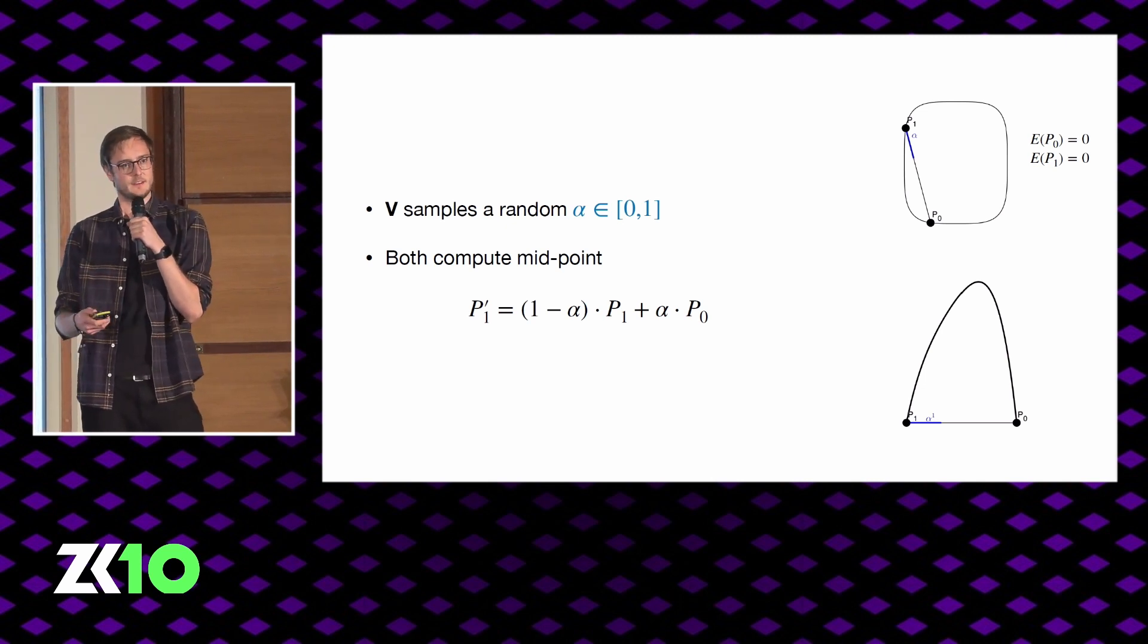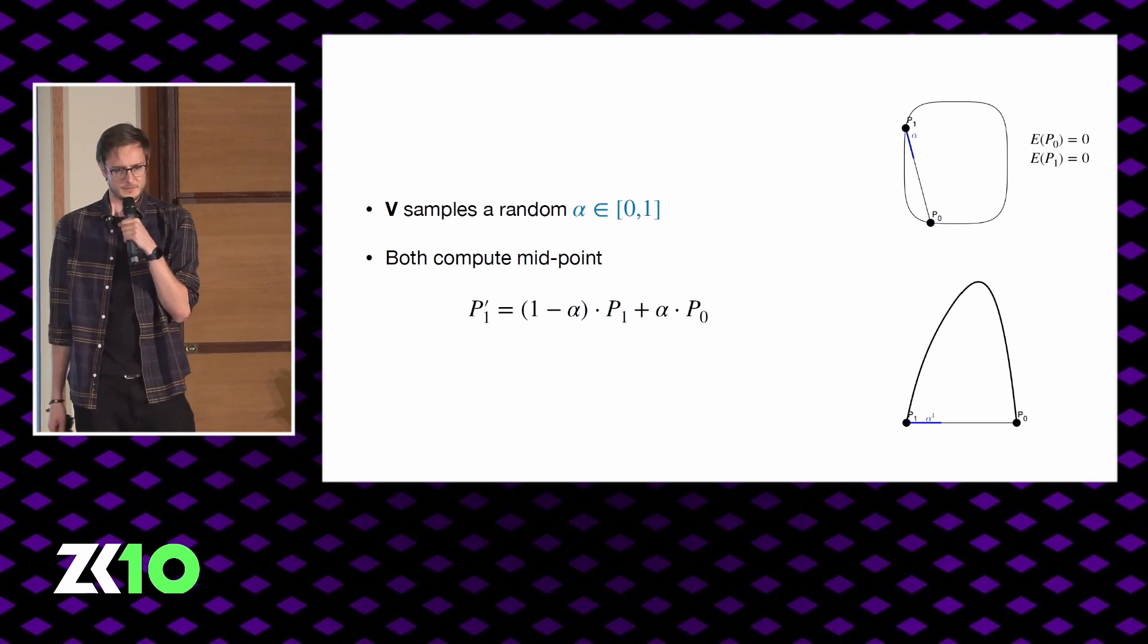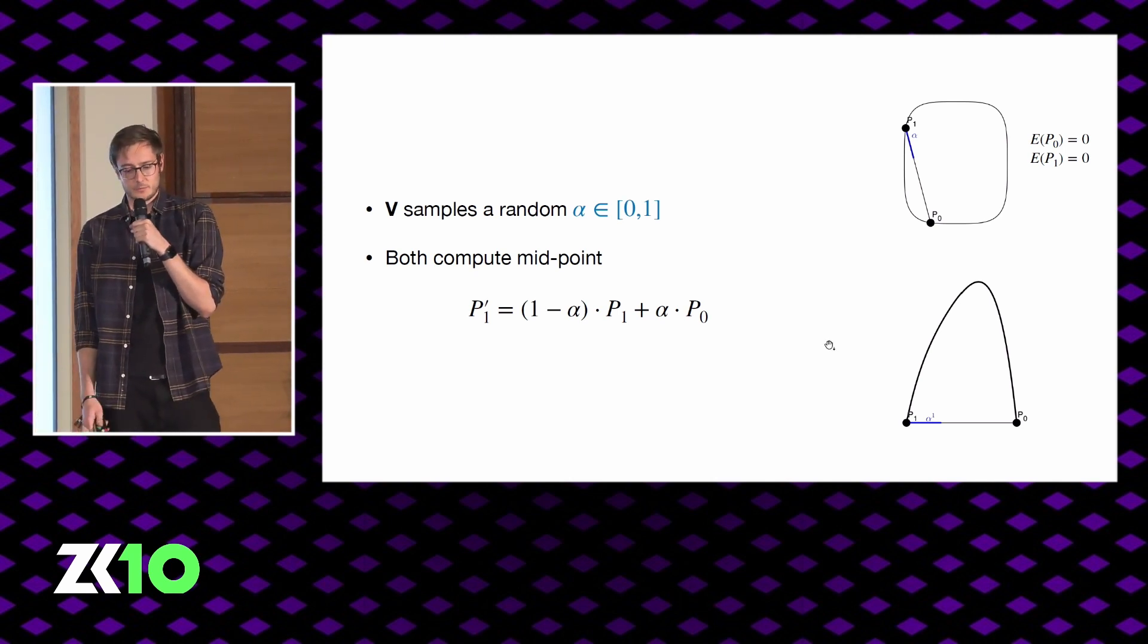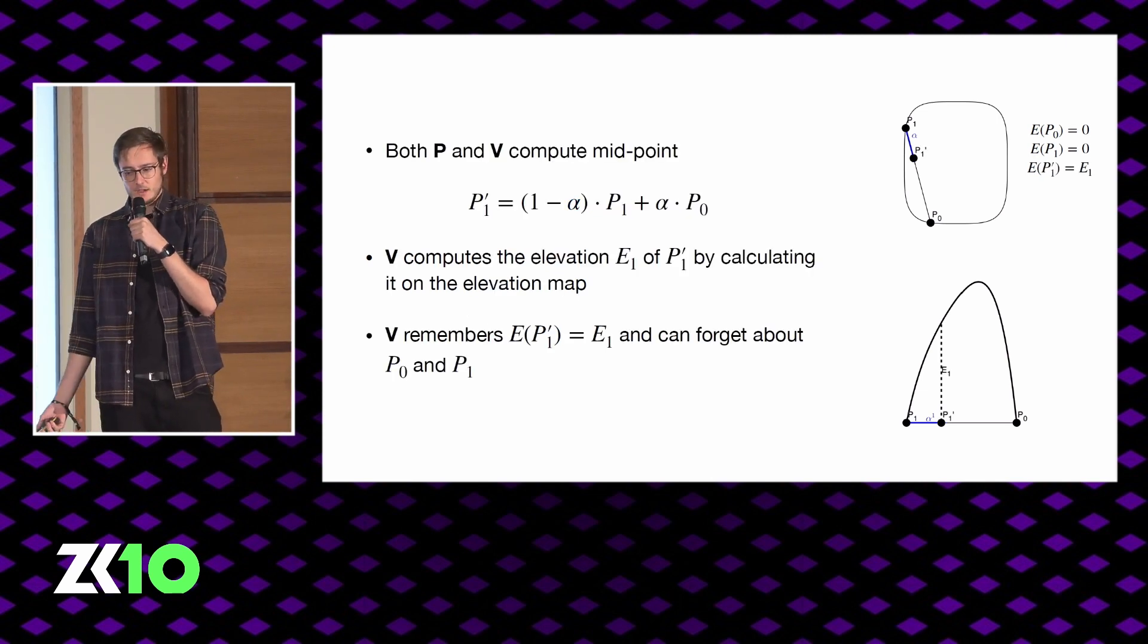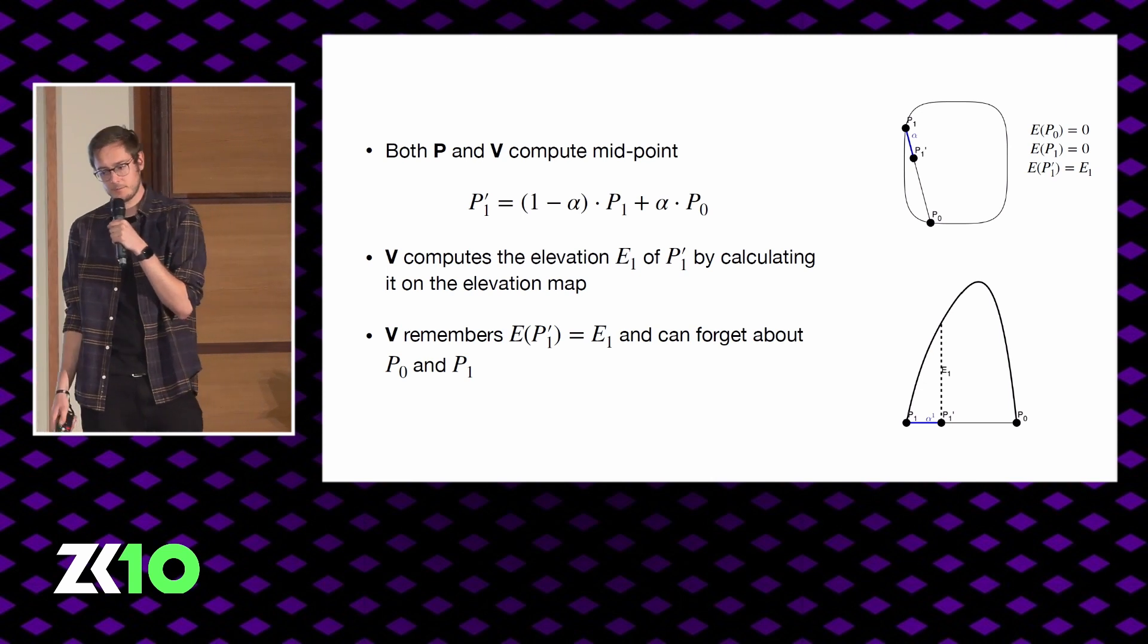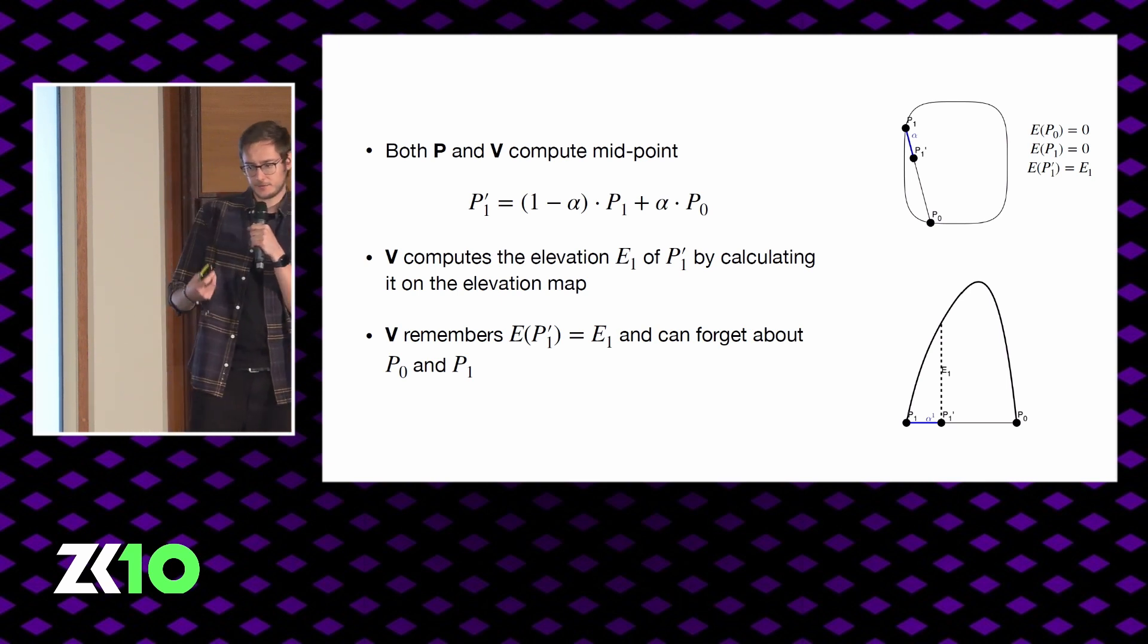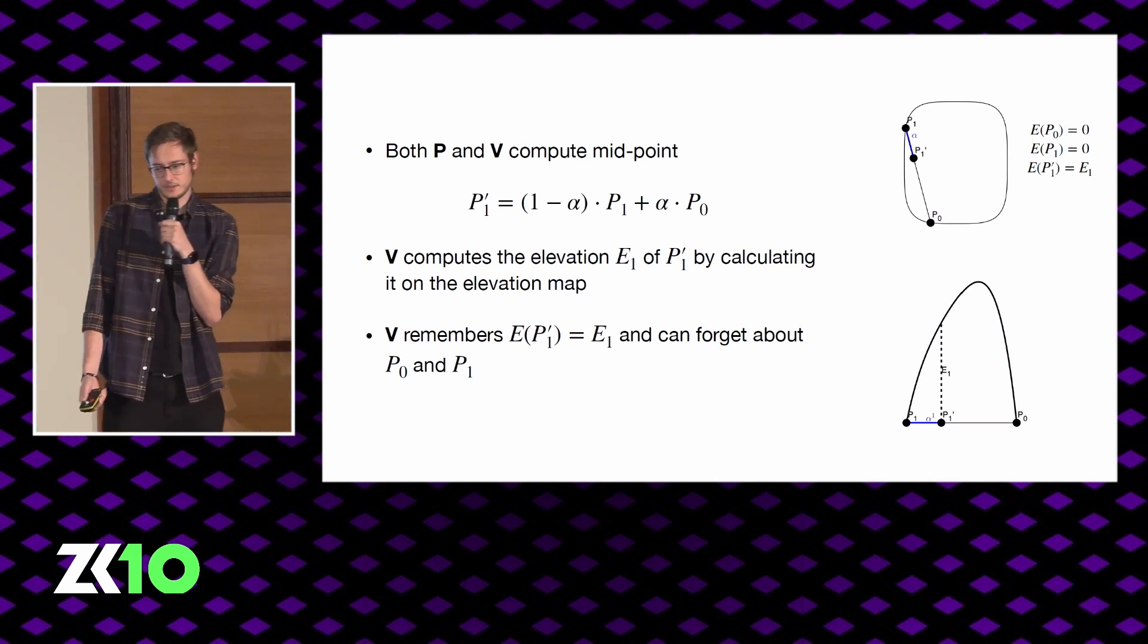So what the verifier is going to do is say, okay, well I'm just going to check this elevation map in a single point. So we do the classic thing. He samples a random point alpha, or rather a random scalar alpha between zero and one. This is going to define a random midpoint between P0 and P1. What the math is saying here is just that P1 prime is alpha percent away from P1 in the direction of P0. The verifier is able to compute this point P1 prime by himself because he's just looking at the map and drawing a line, computing the percentages. He's going to use the prover's elevation map to compute the claimed elevation of P1 prime on this map.